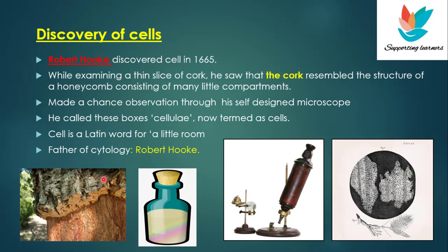How did Robert Hooke discover the cells, and what was he observing? He was actually examining a thin slice of cork, and he saw that the cork resembled the structure of a honeycomb consisting of many little compartments. He made this chance discovery through his self-designed microscope, since there were no sophisticated microscopes available like today. Under this microscope he observed a thin slice of cork — cork is the outer bark of the tree.